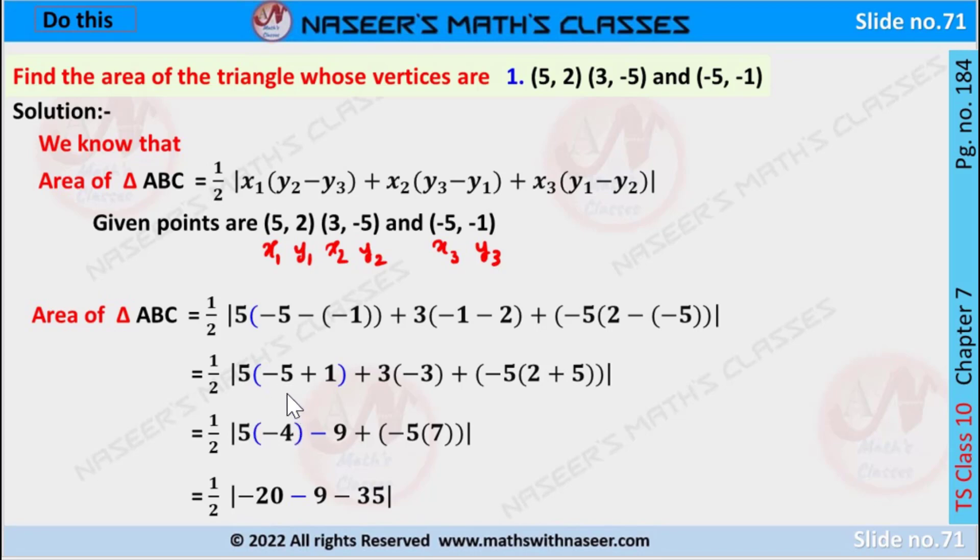So after simplifying -5 + 1 we get -4, and after multiplying 3 into -3 we get -9, and after adding 2 + 5 we get 7. Next,